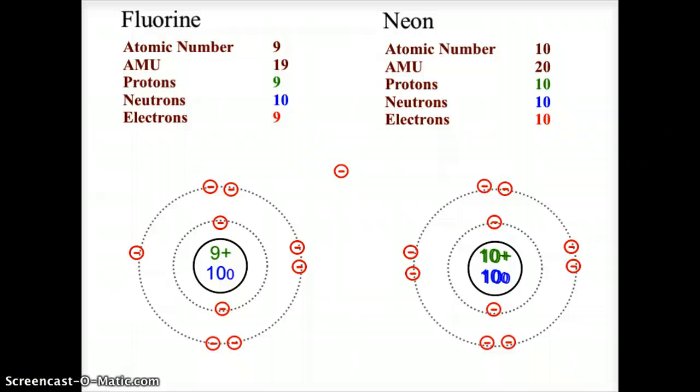Comparing neon to fluorine: fluorine is looking for an extra electron to fill its outer shell, making it very attractive for bonding. Neon is already full and doesn't want extra electrons, so bonding is not something neon looks to do. Hopefully this helps you understand the arrangement of electrons, protons, and neutrons in the atom using Bohr's model — a simplified version of the atom, but helpful in understanding atomic structure and bonding of the elements.